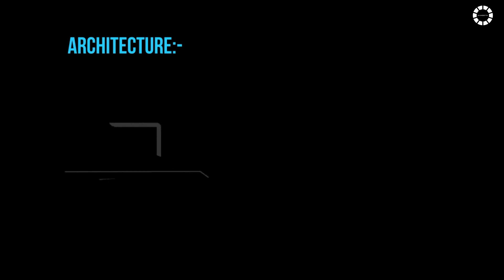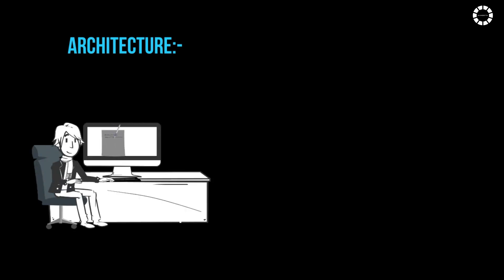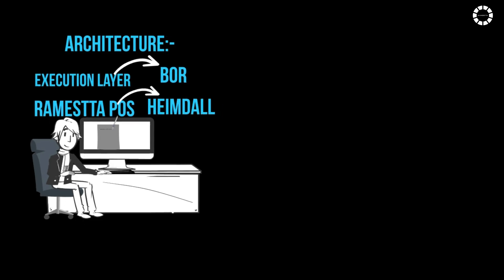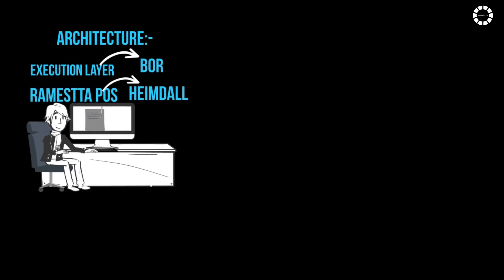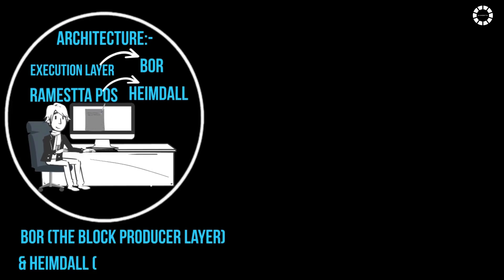Architecture: This section provides architectural details of Romesta's Proof-of-Stake. Due to the proof-of-stake consensus, Romesta POS consists of a consensus layer called Heimdall and an execution layer called Bohr. Nodes on Romesta are designed with a two-layer implementation, represented by Bohr the block producer layer and Heimdall the validator layer.